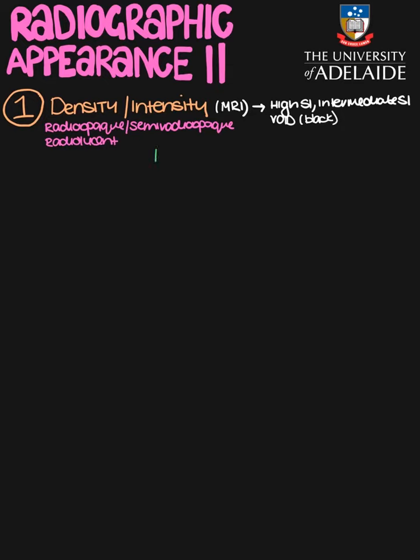Regardless of whether it's T1 or T2 weighted, we'd still use these three major terms, though they will slightly differ because we are looking at sensitivity towards different materials. When describing fractures — especially on CT and X-ray, which are the standard modality for fracture evaluation — all fractures are going to appear radiolucent. This is because when a bone snaps, air and surrounding tissues fill the fracture space, so the radiographic appearance refers to the space between the bone fragments.